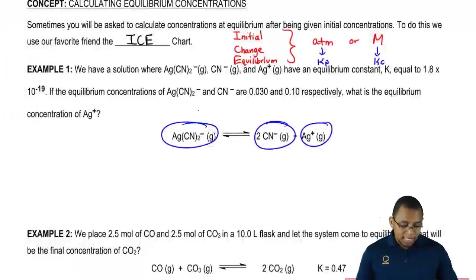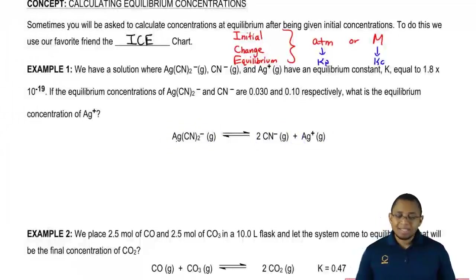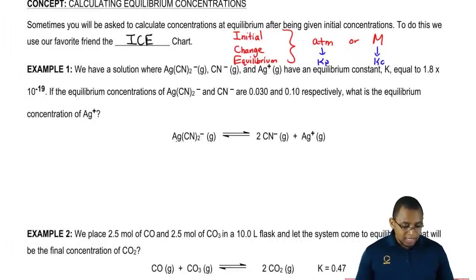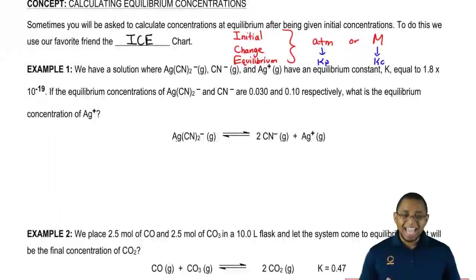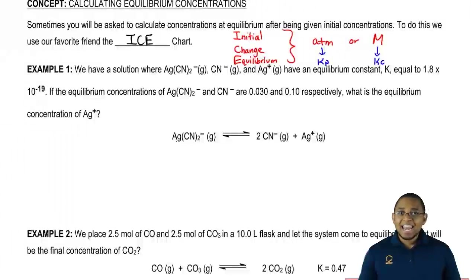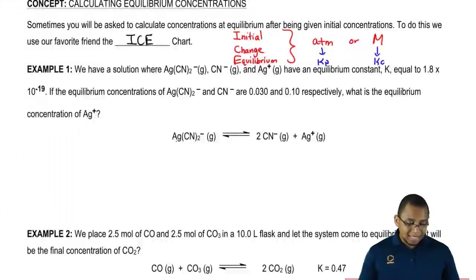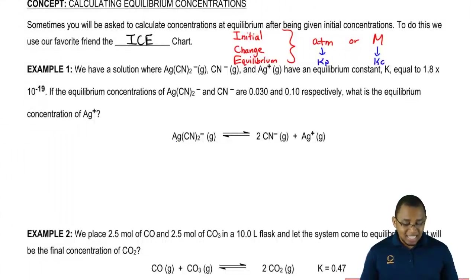Let's take a look at the first two examples and see how we approach these types of questions. We have a solution where AgCN₂⁻ is in equilibrium with CN⁻ gas and Ag⁺ gas, and they have an equilibrium constant K equal to 1.8 times 10 to the negative 19.